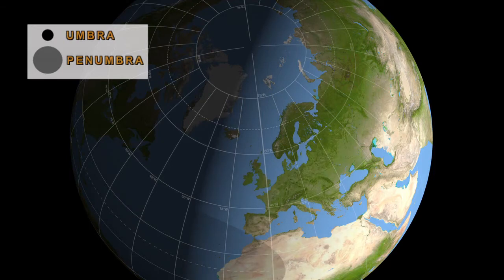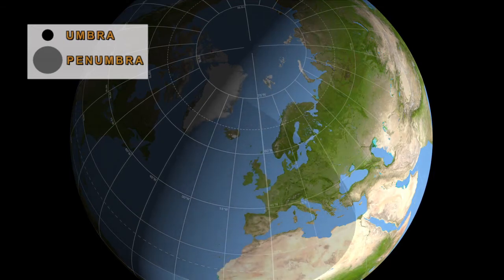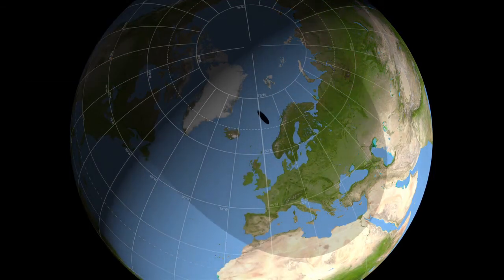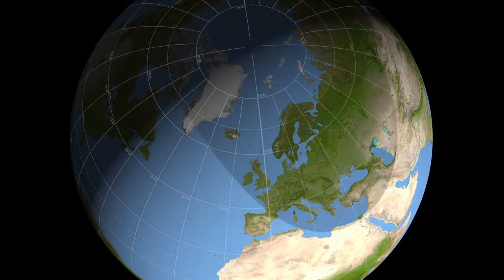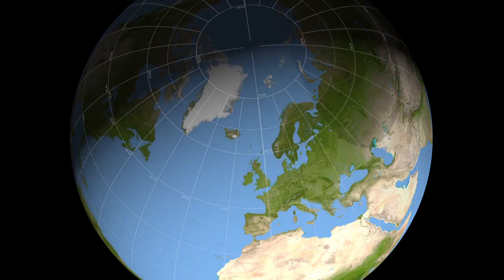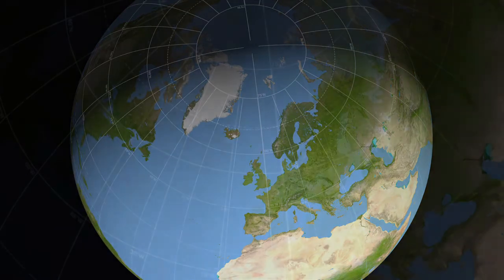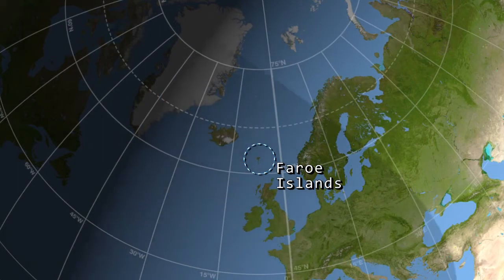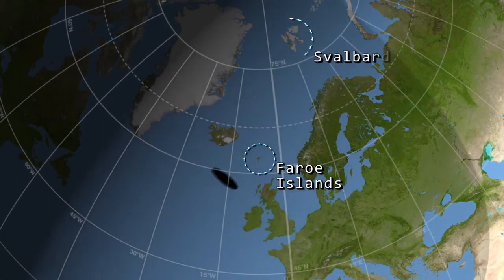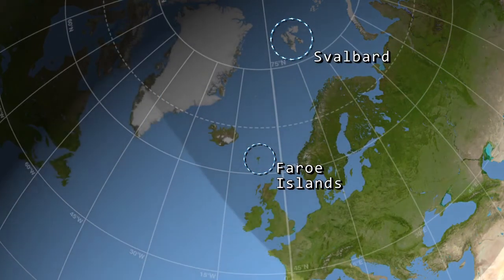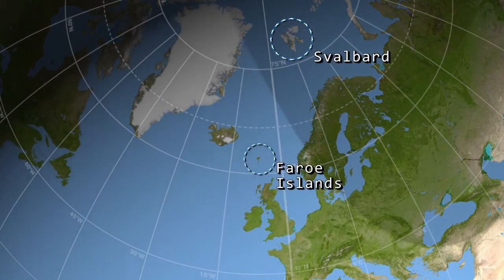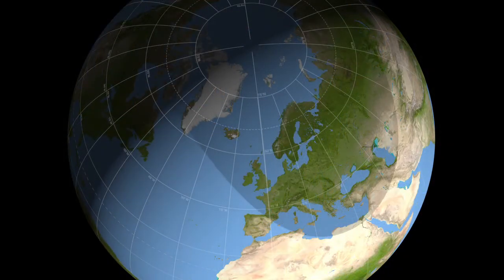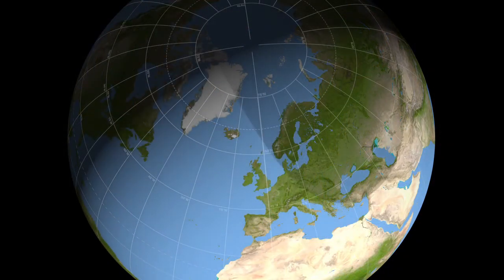The central black dot you see is the Umbra, where the Sun is completely covered by the Moon. The fainter, much larger shadow is the Penumbra, where the Sun is only partially obscured. The Faroe Islands of Denmark and the Svalbard Islands off Norway are in the path of the Umbra, while the Penumbra covers all of Europe and extends to North Africa and Russia.